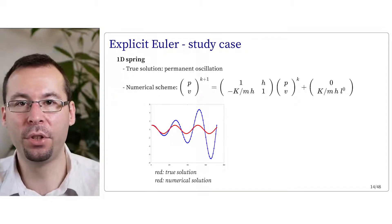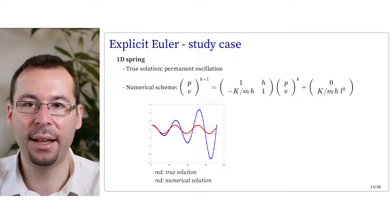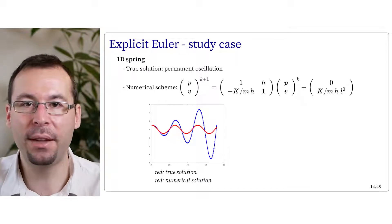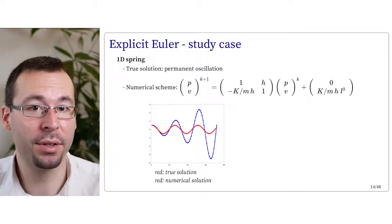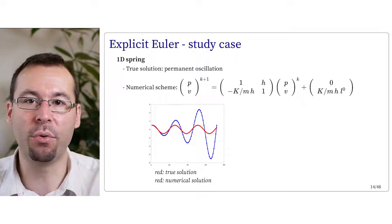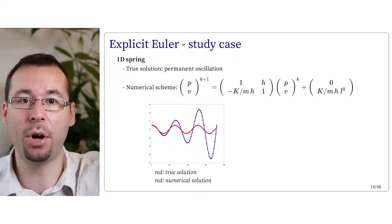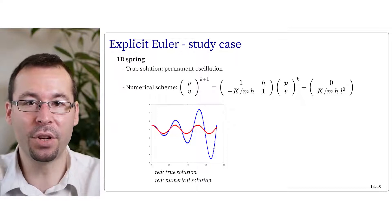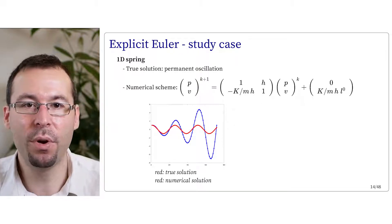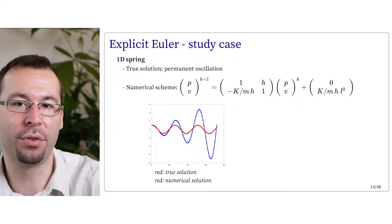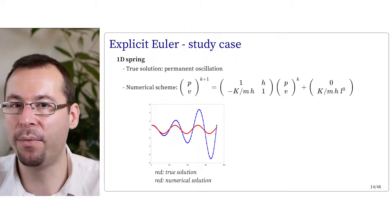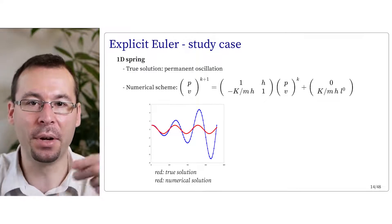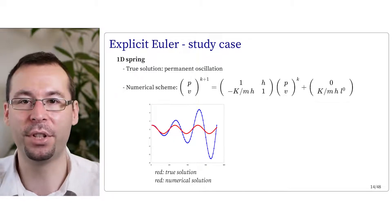We can also look at what explicit Euler does in the 1D spring simulation. The true solution in red is a permanent oscillation, and the numerical result in blue is even worse — it's not only wrong, but it oscillates more and more, actually diverging to infinity. In a graphics application, you will certainly notice a spring oscillating more and more and eventually diverging.